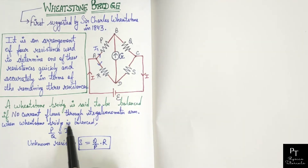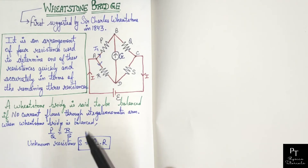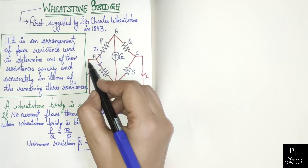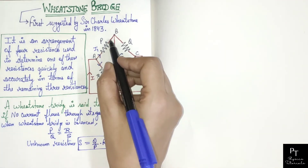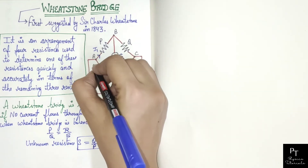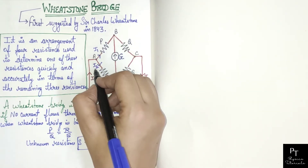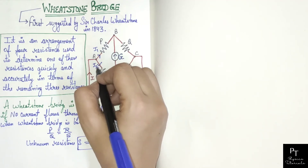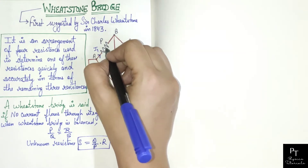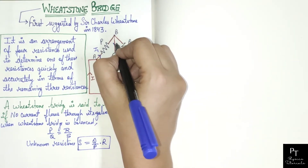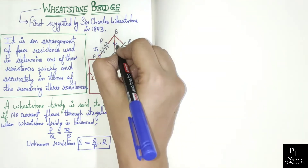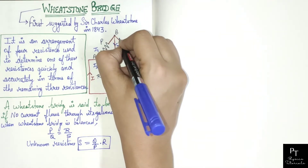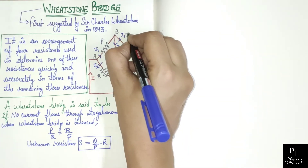Now let's derive this balanced condition using Kirchhoff's law. The current I flows towards junction A and divides there. Current I1 flows into one arm and current I2 equals I minus I1 flows into the other arm. Now I1 flows further, and some amount of current IG flows through the galvanometer arm.